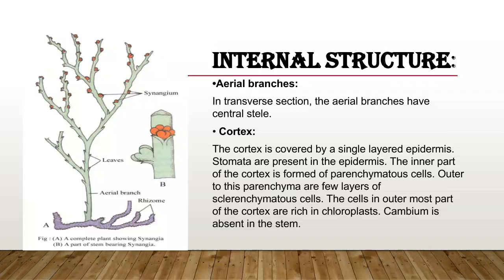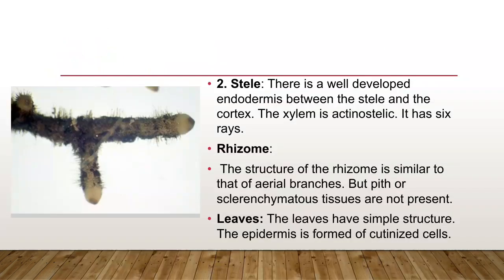Internal structure: in transverse section, the aerial branches have a central stele and cortex. The cortex is covered by a single-layered epidermis; stomata are present in the epidermis. The inner part of the cortex is formed of parenchymatous cells; outer to this parenchyma are a few layers of sclerenchyma cells. Cells in the outermost part of the cortex are rich in chloroplasts. Cambium is absent in the stem. There is a well-developed endodermis between the stele and cortex. The xylem is actinostelic with six rays.